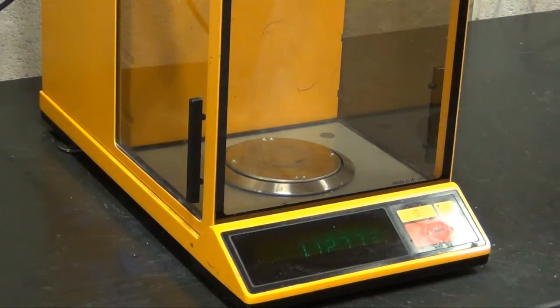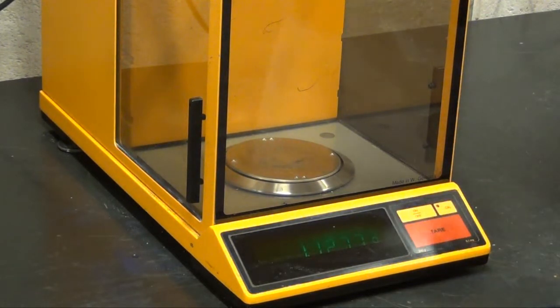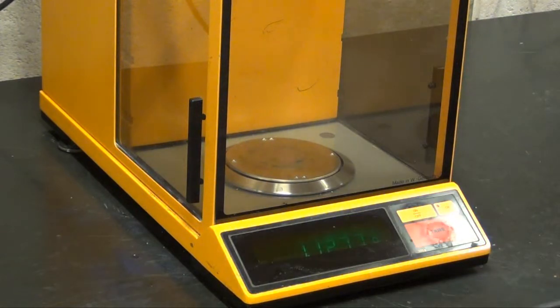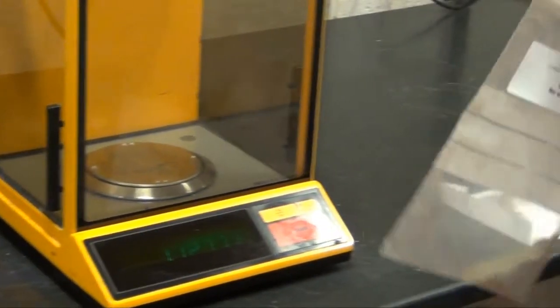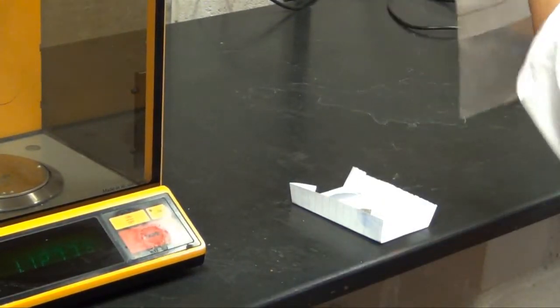You then approximately place the required amount of sample into the boat using a spatula. Every time you need to add to the amount in the paper boat, you must remove the sample from the scale.